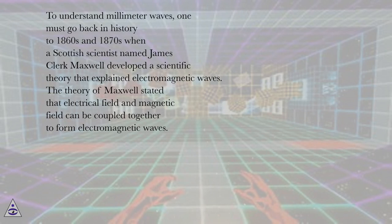To understand millimeter waves, one must go back in history to 1860s and 1870s when a Scottish scientist named James Clerk Maxwell developed a scientific theory that explained electromagnetic waves. The theory of Maxwell stated that electrical field and magnetic field can be coupled together to form electromagnetic waves.